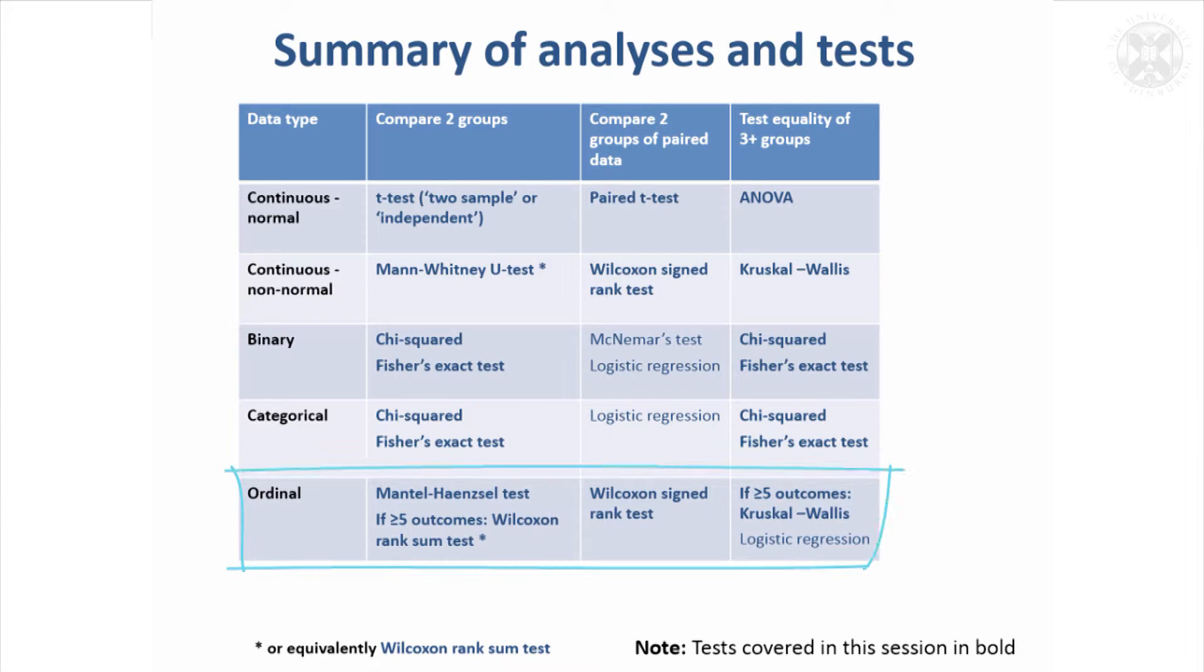For ordered data you've got the option - you can do the Mantel-Haenszel test to compare two groups, or you can treat it as continuous scale if you've got quite a lot of ordered categories, five or more, but use the ranks. So the Wilcoxon rank-sum test is one to consider. I should have put the Mann-Whitney U test - they're both the same, so I need to change that.